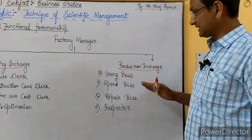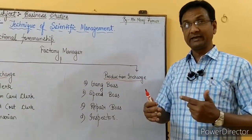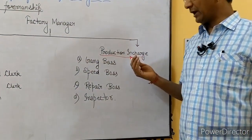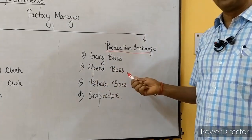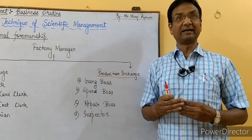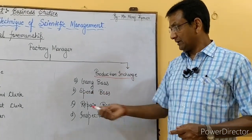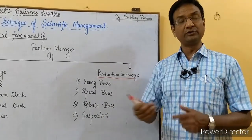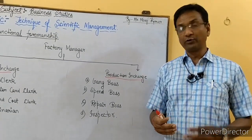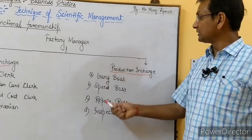The production in-charge includes: the gang boss, who will lead workers; the speed boss, who oversees how to get the work done at the right speed and remove obstacles; and the repair boss, who handles repair work.